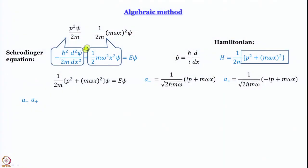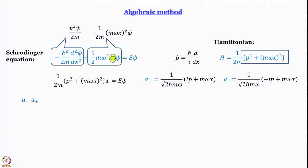Let us quickly recap what we have done in the last module. For the quantum harmonic oscillator we wrote the Schrödinger equation: minus ℏ² / 2m · d²ψ/dx² plus half·m·ω²·x²·ψ = E·ψ. We rewrote the first term using the linear momentum operator p = (ℏ/i)·d/dx, giving p²ψ/2m, and rewrote the second term as 1/2m times (mωx)² acting on ψ, equal to E·ψ.